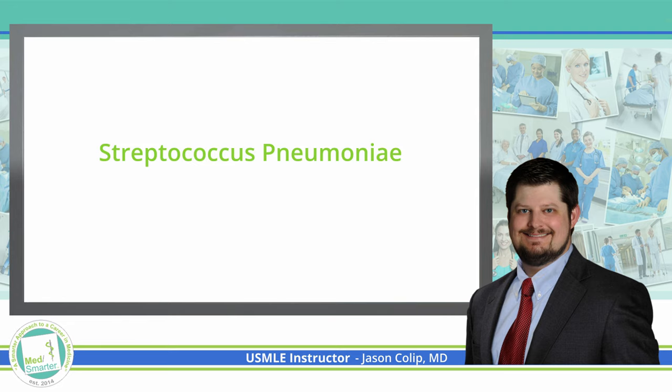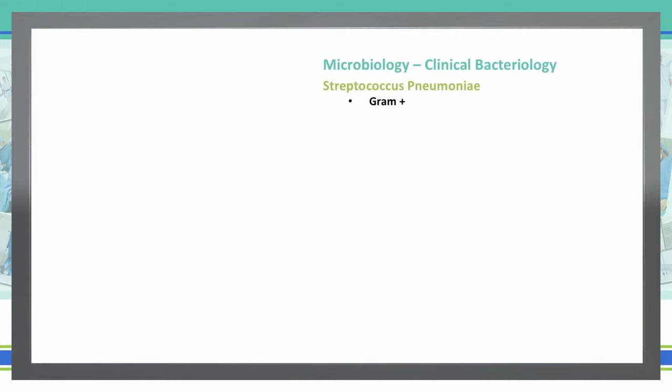Let's talk a little bit closer about Streptococcus pneumoniae. Strep pneumoniae is a gram-positive organism. It is alpha hemolytic, so on a blood agar you will see that green-brown color due to the bacteria oxidizing hemoglobin and giving us methemoglobin, which is the oxidized derivative.